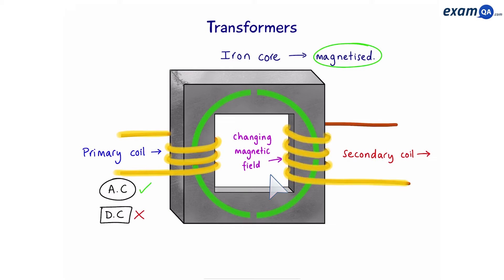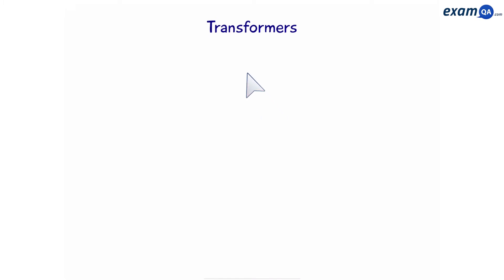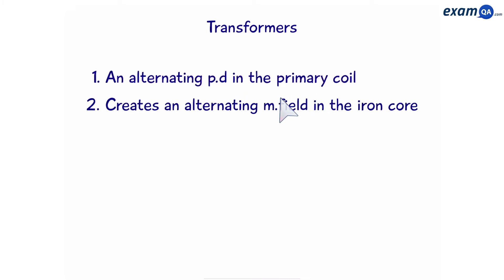Once we have that produced, we will now create the current in the second coil. And because the magnetic field will change in direction, that means the current in the second coil will also be an AC current. So to summarize, here's what you'll write for an exam if they asked you how does a transformer work. Number one, an alternating potential difference is in the primary coil. Number two, this creates an alternating magnetic field in the iron core. Number three, this induces an alternating potential difference. Number four, in the secondary coil.